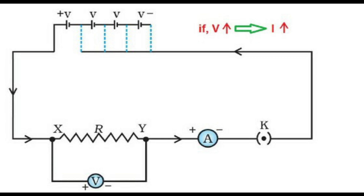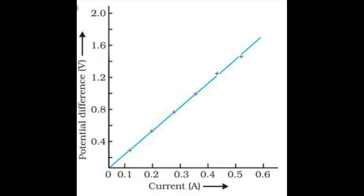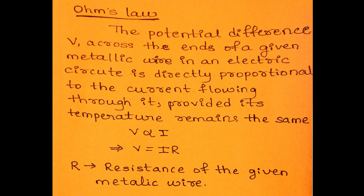Let us consider a circuit connection. We have taken an ammeter to measure the current flowing in the circuit, and a voltmeter to know the potential difference across the ends. When we switch on the circuit, the current will flow through it. We can observe that voltage and current are directly proportional to each other. When we plot the graph of potential difference versus current, we get a straight line. Hence, the ratio of V to I is always constant. This relation between voltage and current is given by George Ohm. According to Ohm's law, potential difference across the resistor is directly proportional to the current through it, provided temperature remains the same.